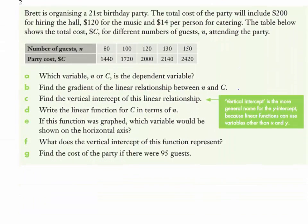Now let's look at some textbook work on dependent and independent variables. Brett's organizing a 21st birthday party: it costs $200 to hire the hall, $120 for music, and $14 per person for catering. The table shows cost for different numbers of guests. In the table, n is the independent variable (like x), and c — the cost — is the dependent variable.